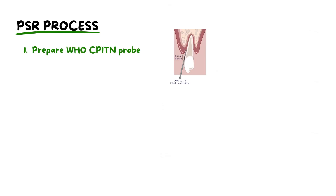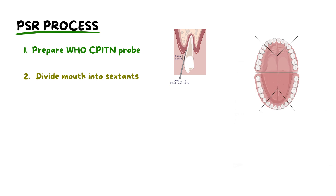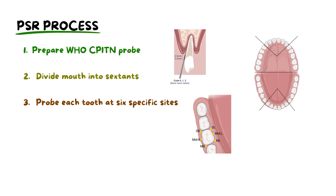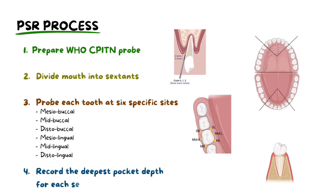In PSR, the dentist uses a WHO probe, notable for its 0.5mm diameter ball at the end and a marked band between the 3.5mm and 5.5mm marks. The oral professional divides the mouth into six sextants and examines each one, using the probe to gently assess pocket depths around each tooth at six specific sites: mesiobuccal, midbuccal, distobuccal, mesiolingual, midlingual, and distolingual. The deepest pocket depth recorded at each of these sites determines the score of each sextant, ranging from 0 for healthy gums to 4 for severe periodontal issues. This methodical approach ensures a precise and comprehensive periodontal assessment.